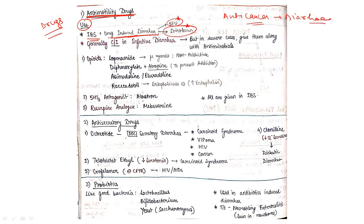Antimotility drugs are generally contraindicated in infected diarrhea, but in severe cases we can give them along with antimicrobials. Antimicrobials are given to counteract infection, and antimotility drugs can be given along with antimicrobials in severe cases.